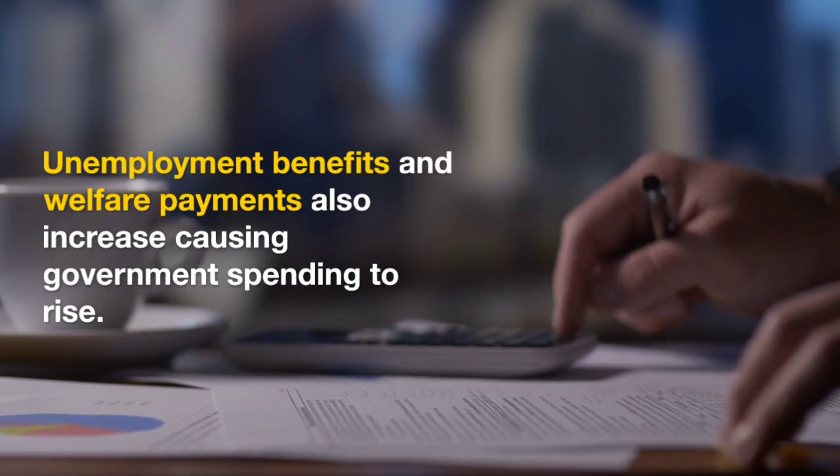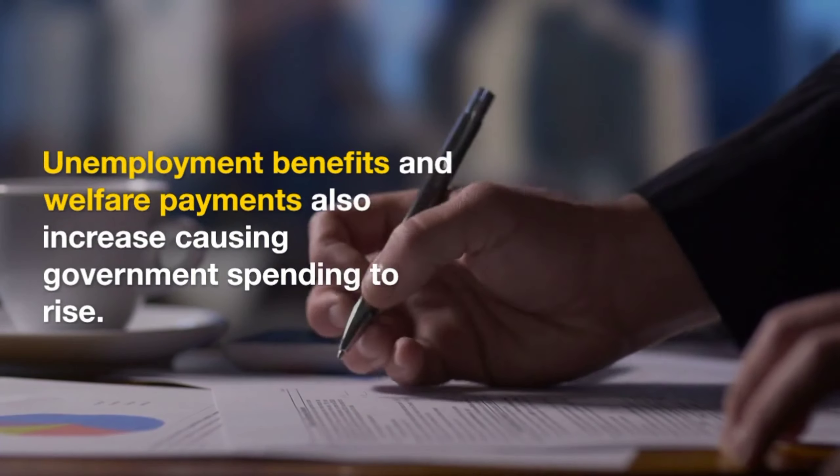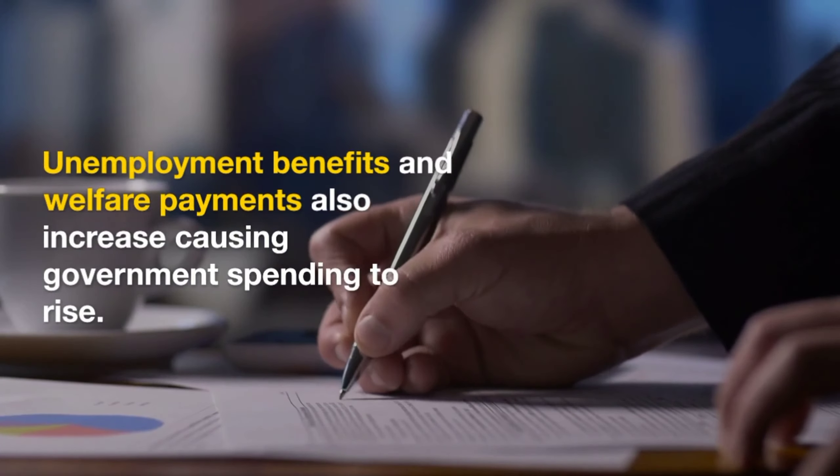Cyclical deficit. This deficit occurs due to fluctuations in the economy. During recessions, government revenue decreases as people earn less and spend less, leading to a reduction in tax revenue. Unemployment benefits and welfare payments also increase, causing government spending to rise.